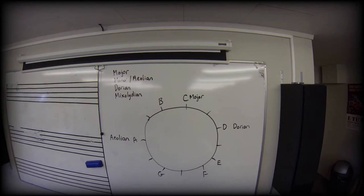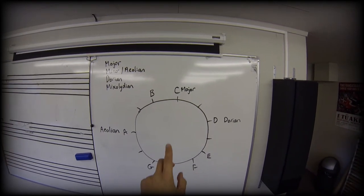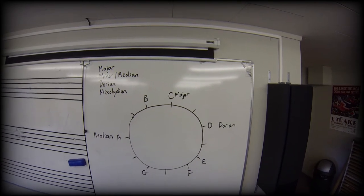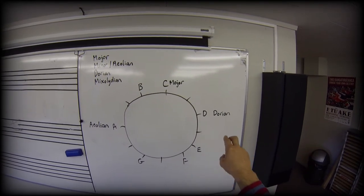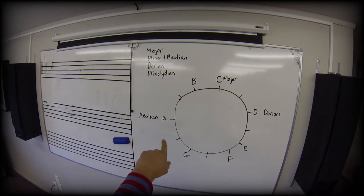So now I've got my three scales placed, three out of the four: C major starting on C, dorian starting on D, aeolian starting on A.